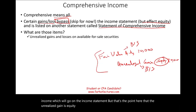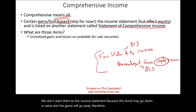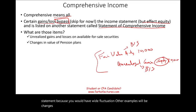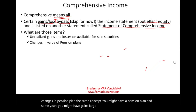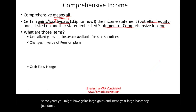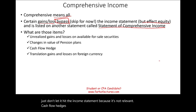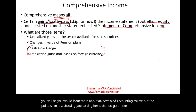We don't want those transactions to hit the income statement because the bond may go down in value and the gain will go away — therefore, don't let it affect the income statement, as you would have wide fluctuation. Other examples include changes in pension plans: in some years you might have large gains, and in some years large losses, so just don't let it hit the income statement because it's not relevant. Cash flow hedges and translation of gains and losses on foreign currency are also examples — you'll learn more about those in advanced accounting.